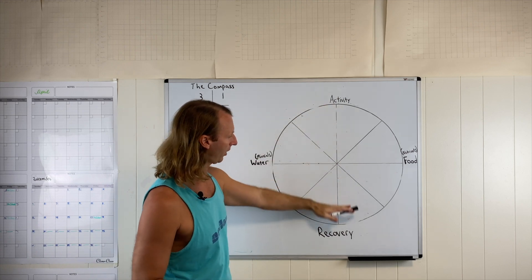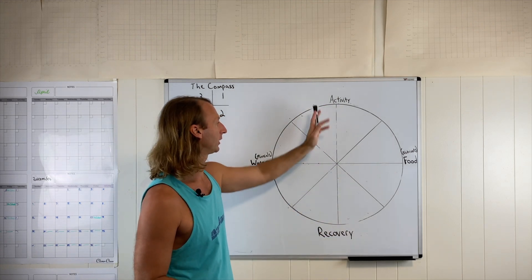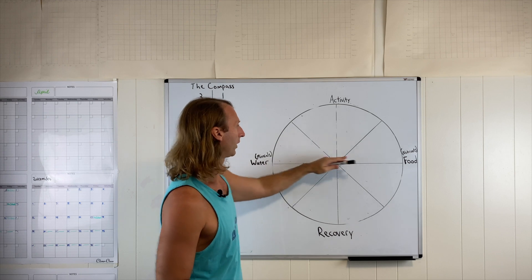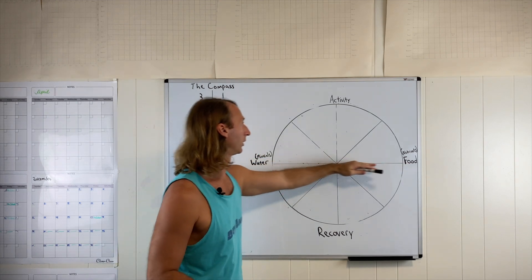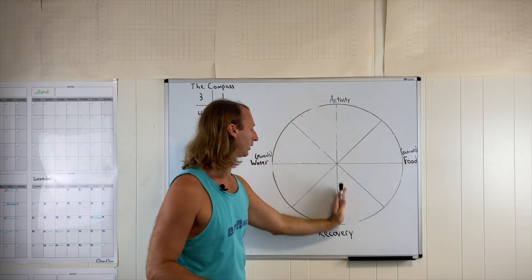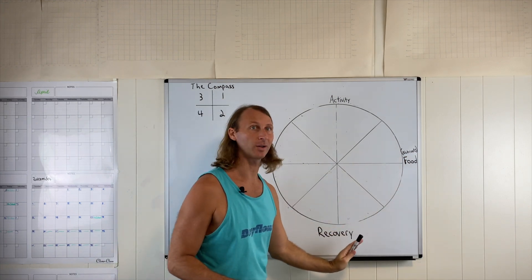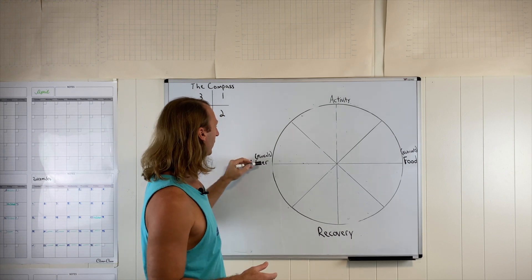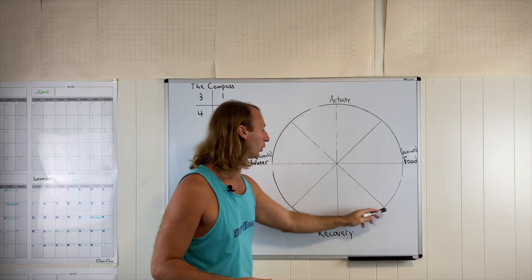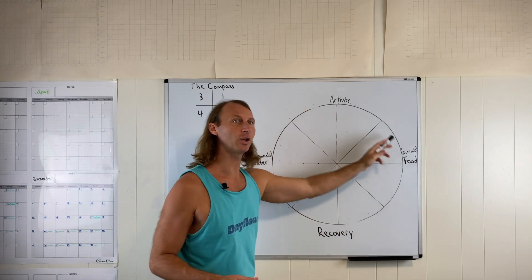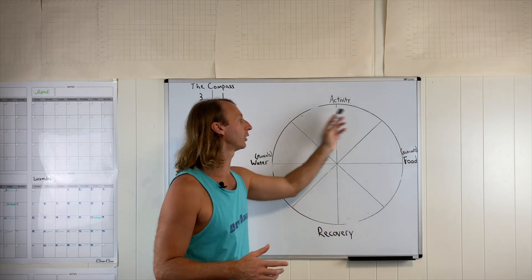We're not going to be active and recover at the same time - we want them to be opposite. So water and food are separated by activity, and then food and water are separated with recovery. It's a very simple strategy. You can rotate this - this could be a two or three hour rotation of your day. The more cycles you get through, the better.